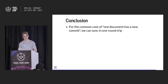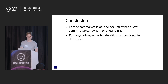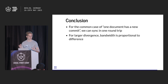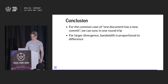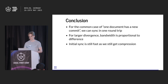So, pretty good. In the common case, when one document has a new commit, we sync in one round trip and send pretty much just that commit. For a larger divergence, we still have bandwidth proportional to the difference in data we have — so we've solved the aeroplane problem. We still get fast initial sync because we're still using the compression that automerge provides.